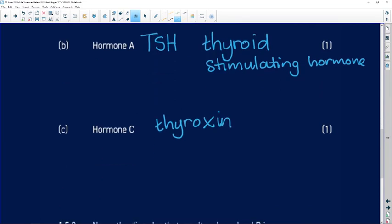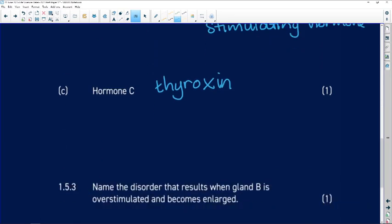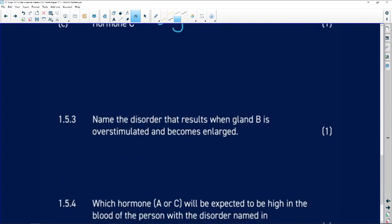Name the disorder that results when the thyroid gland is overstimulated. And instead of the person's neck just having this small gland wrapped around it, that gland then grows very large and it creates a big fold in the skin around the neck.